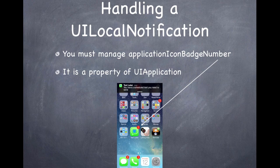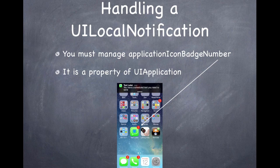One more thing: the badge icon must be completely managed by your app. I ran into this myself — I'd schedule a notification, tap on it, send the message, but coming back to the home screen the badge count was still at 1. That's because the badge number is a property of UIApplication and you are completely responsible for setting it. In my app, whenever a user handles a notification, I do a count and reset the number. If they had 1 to send and sent it, I set it back to 0. If they had 5 and sent 3, I reduce it to 2.